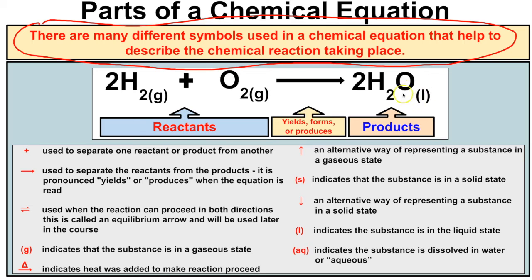Everything on the left are the reactants, everything on the right are the products, separated by an arrow which is similar to an equal sign in a mathematical equation. This arrow typically means yields, forms, or produces. So we have two moles of hydrogen gas reacting with one mole of oxygen gas to yield two moles of water. Here are all the different symbols you might see in chemical reactions in a first year inorganic chemistry course — pause the video and familiarize yourself with them. Now let's start writing our own unbalanced chemical equations from word equations.